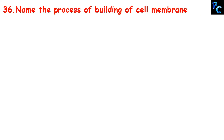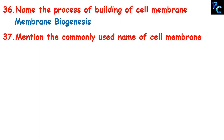Name the process of building of the cell membrane — it is called cell biogenesis. Mention the commonly used name for cell membrane — it is called plasma membrane.